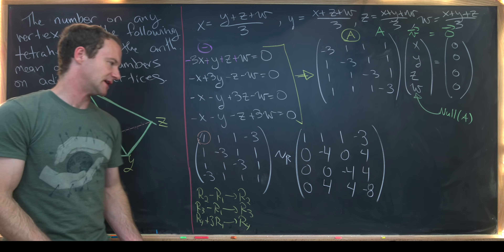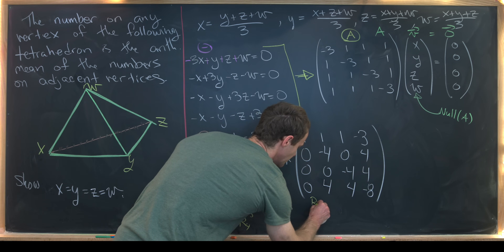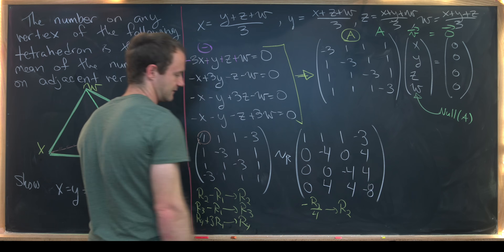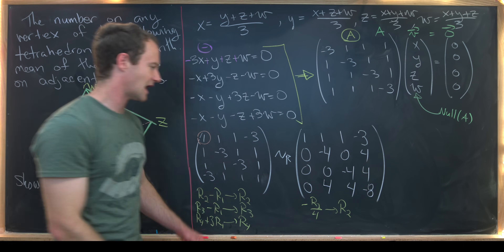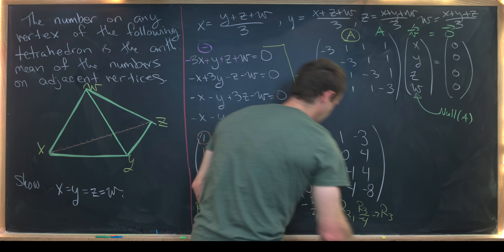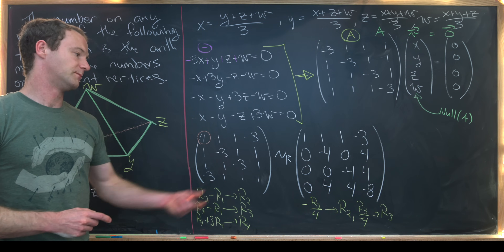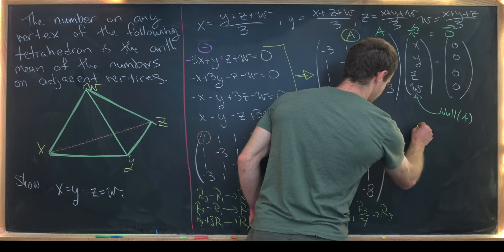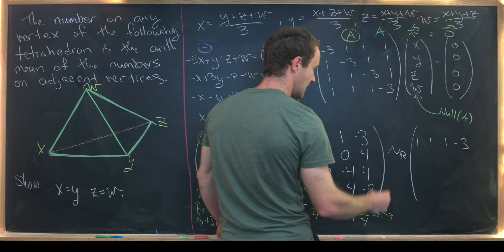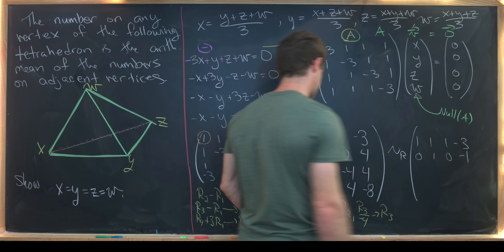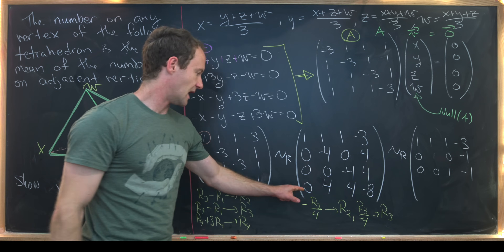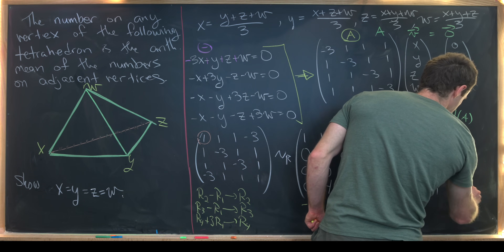Now we can do some scaling. We take row 2 and divide by −4 to make it our new row 2, and similarly divide row 3 by −4, and row 4 by the appropriate factor. That leaves us with a row-equivalent matrix: [1, 1, 1, −3], [0, 1, 0, −1], [0, 0, 1, −1], [0, 1, 1, −2].